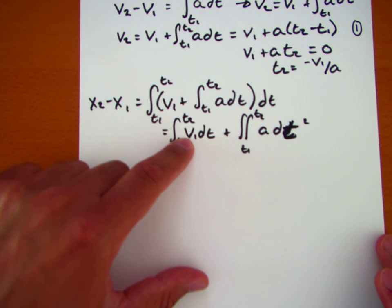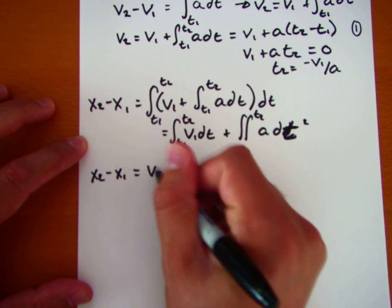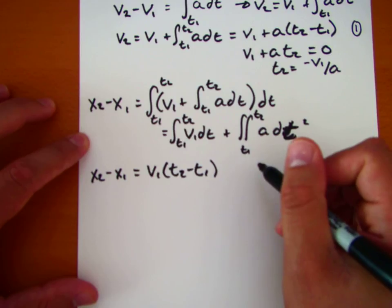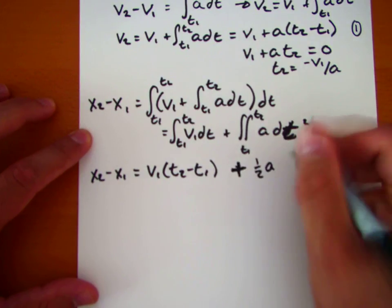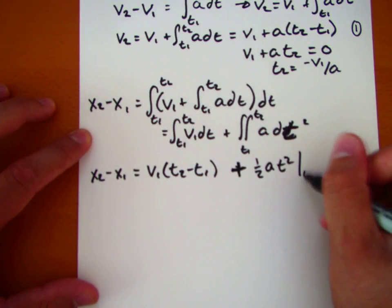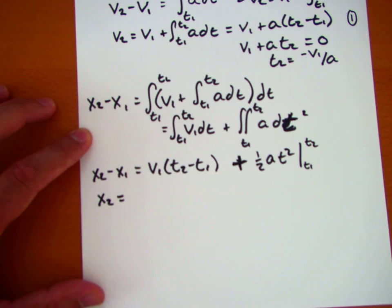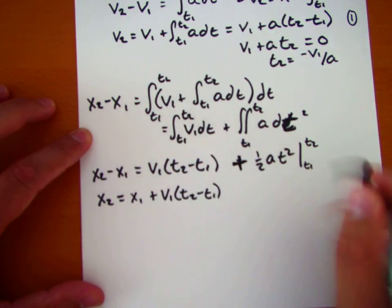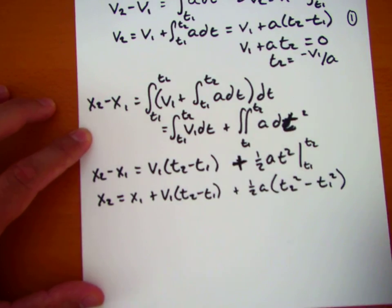Well, we've already done a calculation of the integral of a constant, and v1 is a constant. So we can say x2 minus x1 is equal to, this term becomes simply v1 times t2 minus t1. And the double integral of a constant is equal to 1 half a t squared evaluated from t1 to t2. So that this whole thing becomes x2 equals x1 plus v1 times the quantity t2 minus t1 plus 1 half a times the quantity t2 squared minus t1 squared.